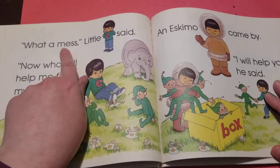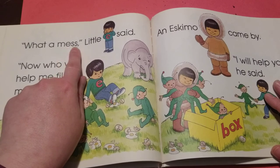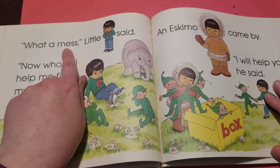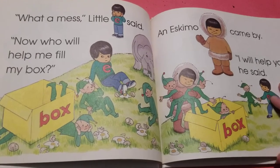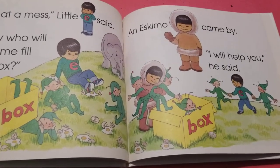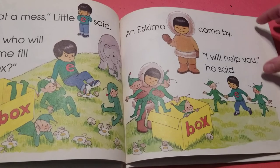The elephant went up and down. The eggs fell out of the box. The elves fell too. So did little E. What a mess, little E said. Look at the word mess. M-m-e-s. Mess. It has that eh, E sound. Now who will help me fill my box? An Eskimo came by. I will help you, he said.